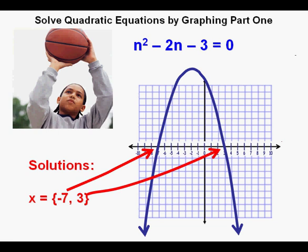For example, this graphed quadratic function would be from a quadratic equation with solutions at x = -7 and at x = 3. It will be like reading solutions off a number line.